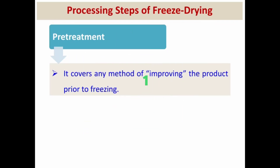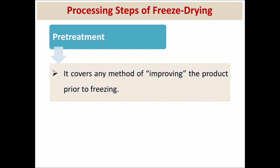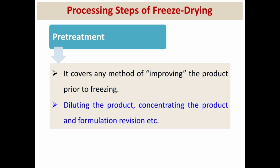The first step of the freeze drying process is pre-treatment. Pre-treatment covers any method of improving the product prior to freezing, such as diluting the product, concentrating the product, and formulation revision.